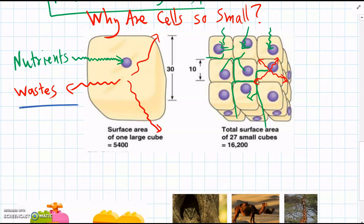So that's the main reason cells are so small. Nutrients and wastes—the time to travel through the cell is less.